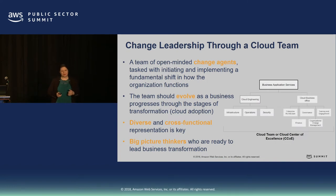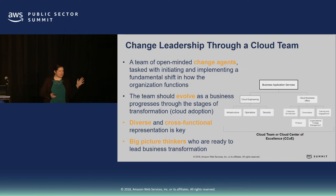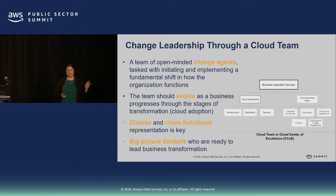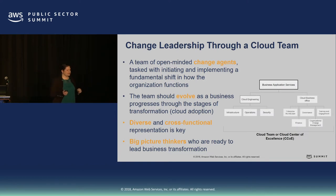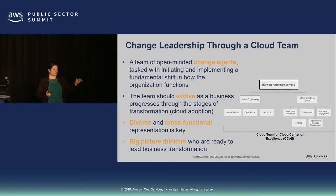You'll see in the chart we start thinking about business application services — notice it doesn't say IT. We're focused on the business and our organization. Then we split into two sides: an engineering, more technical side, and a Cloud Business Office — which might be a new term for you. When we think about the engineering side — infrastructure, operations, security — that feels comfortable to most people from IT.